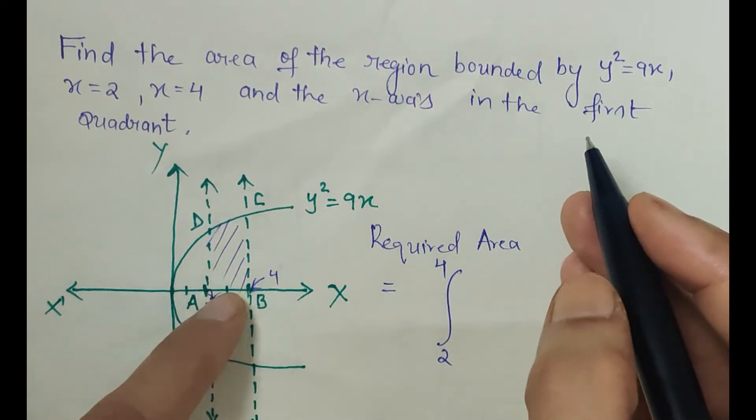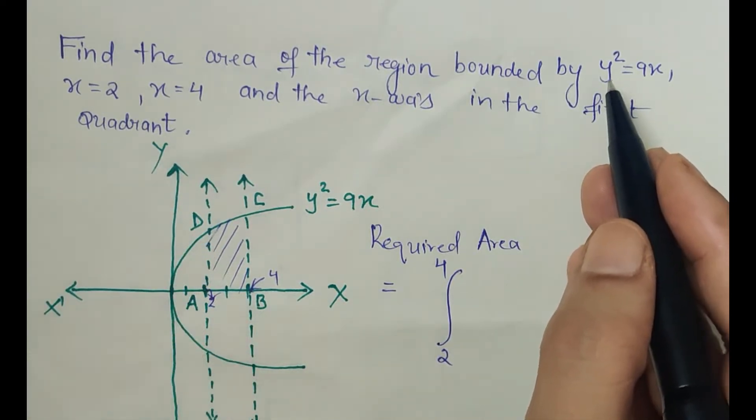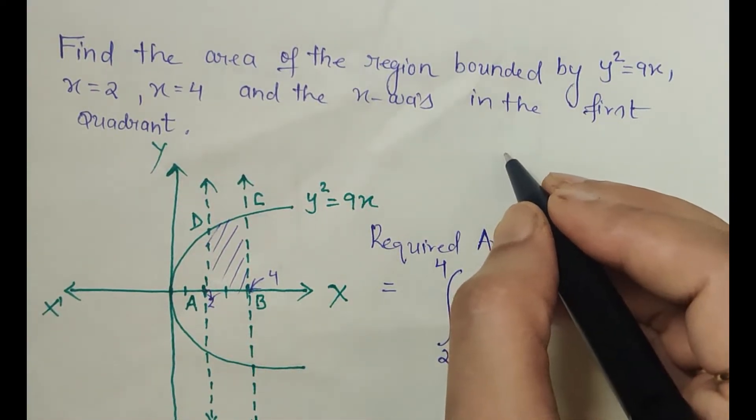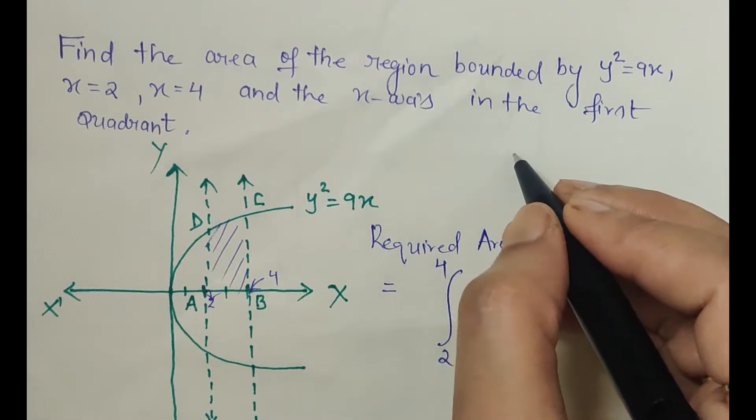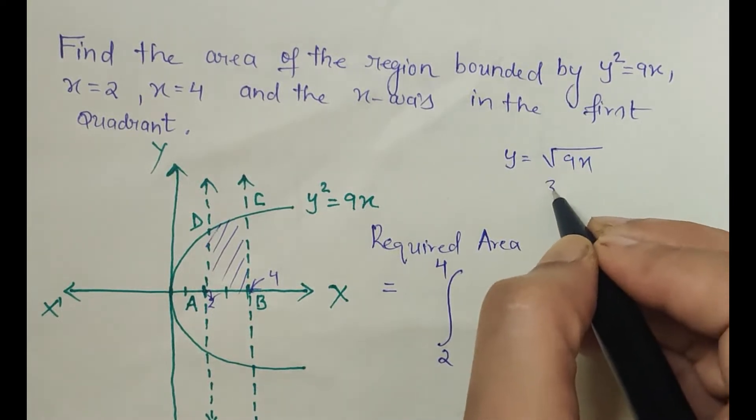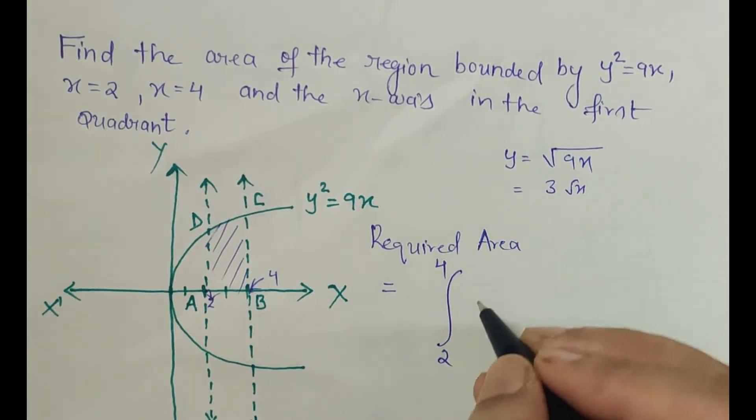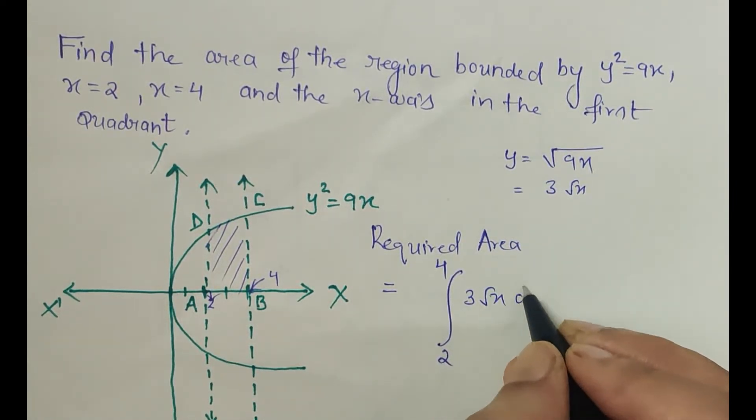So we will be using this equation of the parabola. From it, it can be written in y form as y = √(9x), which is 3√x. So I will write 3√x here dx.